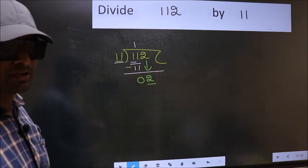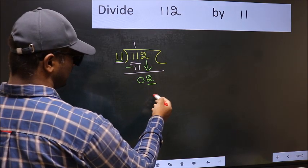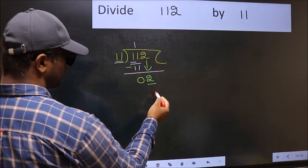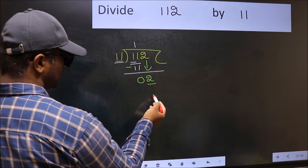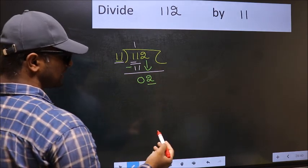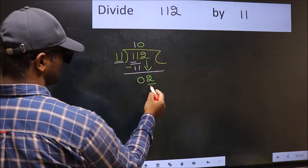Instead, what you should think of doing is, which number should we take here? If I take 1, we will get 11. But 11 is larger than 2. So what we should do is take 0. So 11 into 0, 0.